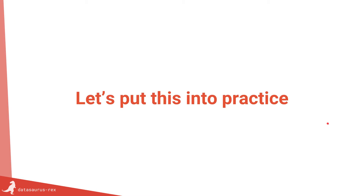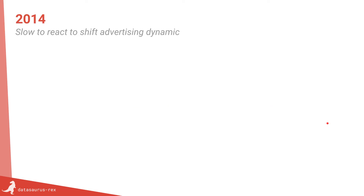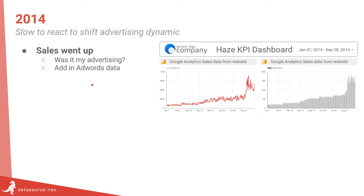Let's put this into practice. Set the scene with that retailer who sells masks. Go back to 2014 — we've started using the product, put in some sales data from our Google Analytics accounts. We see the units sold, revenue, it updates daily. Sales went up — this is brilliant. What happened? Was it my advertising? It's hazy, that might just be the case, but the advertising might have worked too.